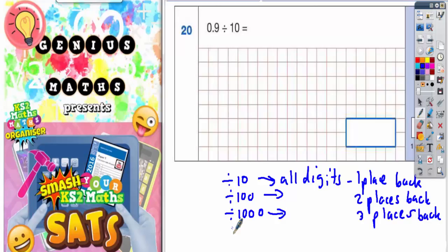Remember, if you're multiplying, it's the same number of places, but instead of moving the digits back, you actually move the digits forward instead.